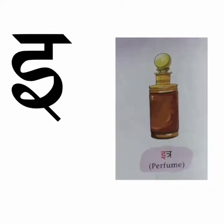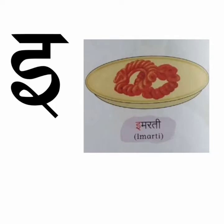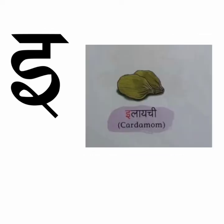E. E se itra. Itra means perfume — perfume is fragrant. E se imarat. Imarat means building; we see buildings all around us. E se imrati. Imrati looks like jalebi and it is sweet in taste. E se ilaichi. Ilaichi means cardamom; it is used in making sweets.